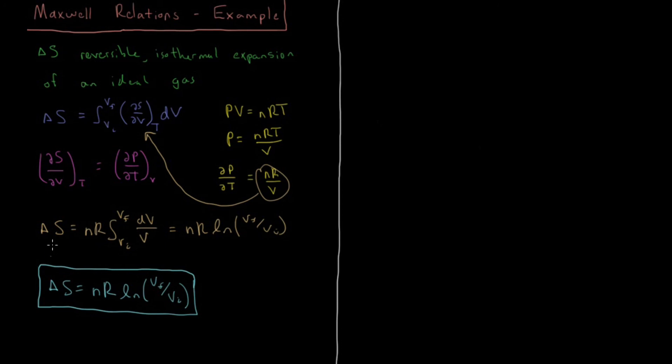So this Maxwell relation that we had from the Helmholtz energy proved very useful here because it gave us the same result that we got from that other calculation. And if we use other Maxwell relations, we can derive similar results and can really help us avoid some very complicated derivatives with respect to entropy. Thank you very much.